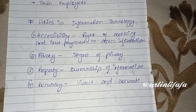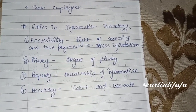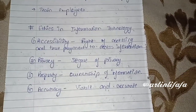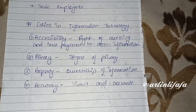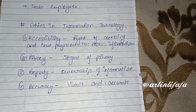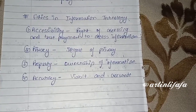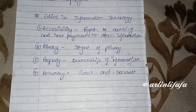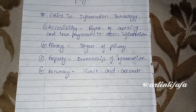Next topic is ethics in information technology. First is accessibility — the right of accessing information with true payment. Accessibility means giving someone the right to use information. We should ensure that only the authorized person uses it, and if another party wants access, they can do so only after a fixed payment.